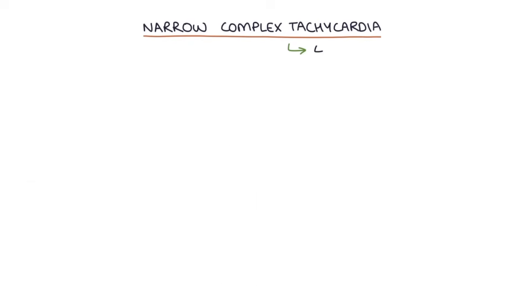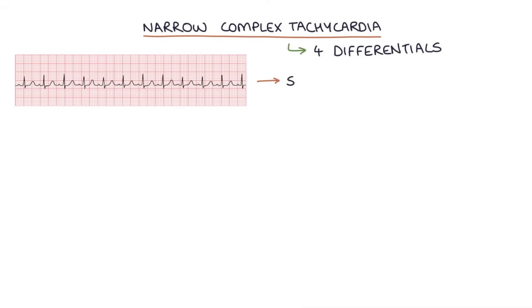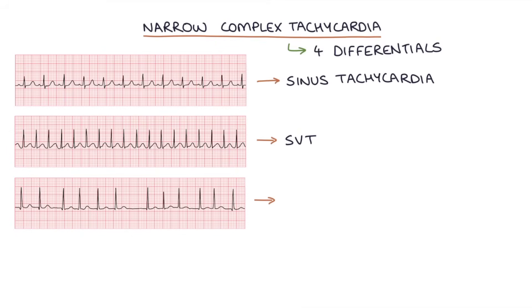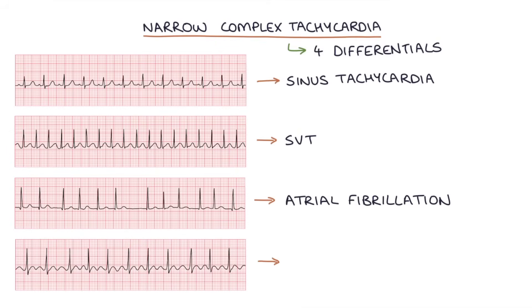There are four main differentials of a narrow complex tachycardia: sinus tachycardia, SVT, atrial fibrillation, and atrial flutter.